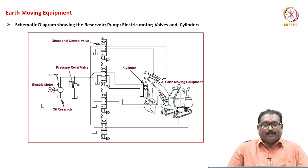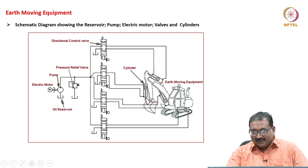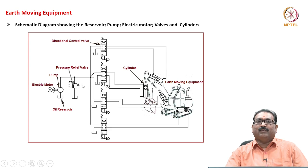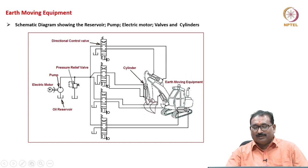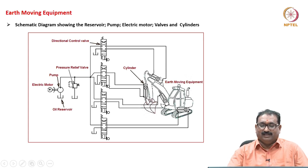Then, earth-moving equipment — I am showing the figure here. It shows various cylinders: double-acting cylinders are used at multiple points. Each cylinder is controlled through a direction control valve, and there is a power pack consisting of a pump, tank, electric motor, and pressure relief valve. The two ends of each cylinder are connected to valves numbered 1, 2, 3, and 4. All four cylinders are controlled with the help of the complete hydraulic circuit. The basic elements are: reservoir, pump, electric motor, valves, and cylinders — in this case, linear cylinders.